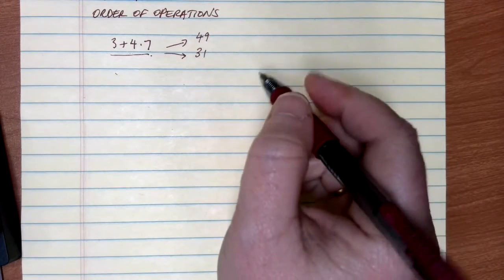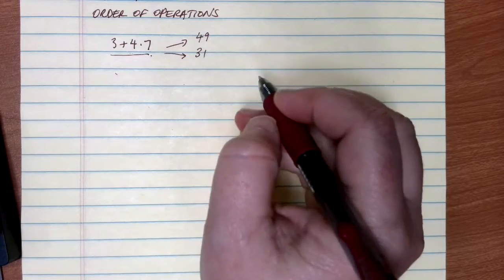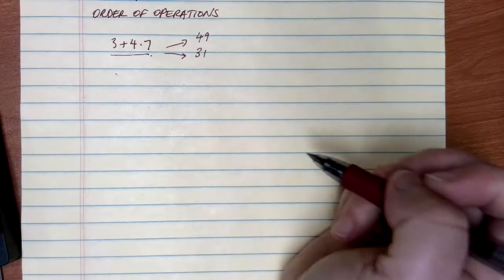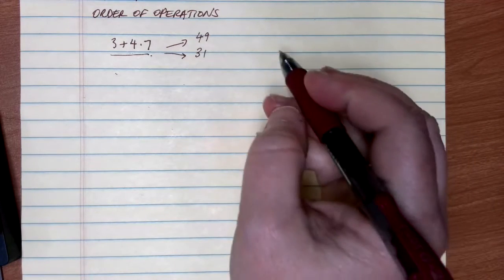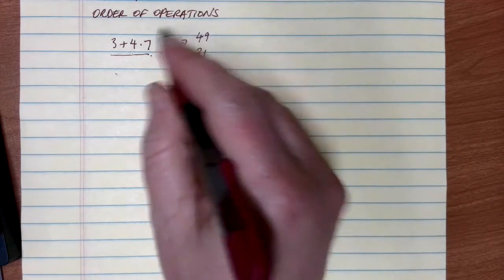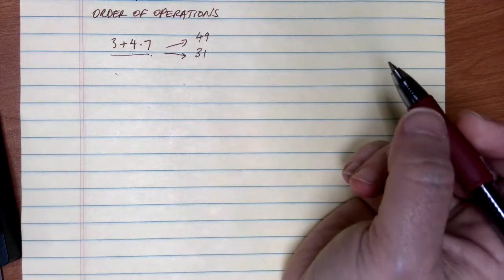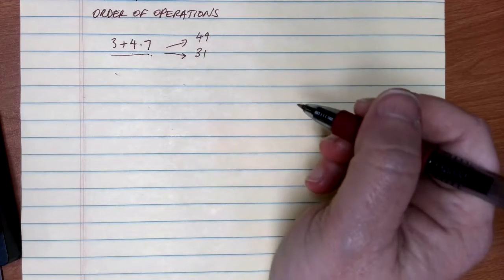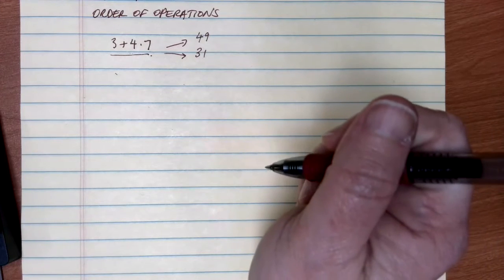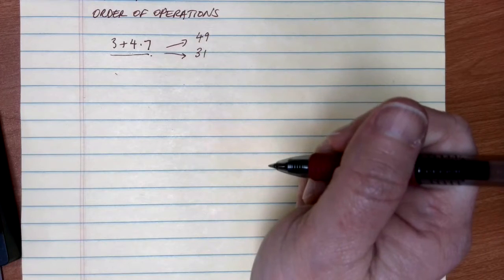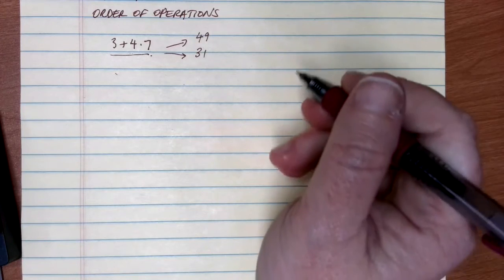So mathematicians, quite a long time ago, came up with a specific process for us called the order of operations. This gives us a specific checklist and order that we should do all of our mathematical operations in when we're trying to get a solution or an answer to a problem.